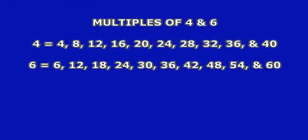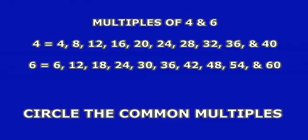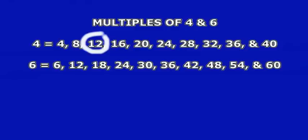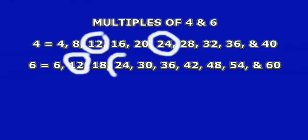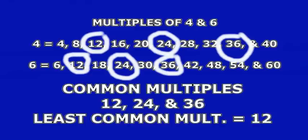You should have the following list of multiples on your paper. Now let's circle the common multiples. The common multiples would be 12, 24, and 36. The first three common multiples of 4 and 6 are 12, 24, and 36. The least common multiple would be 12.